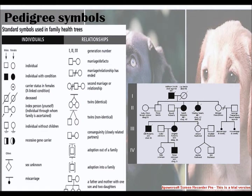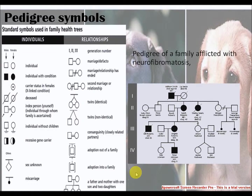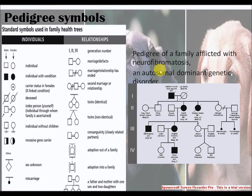This is also an example of a pedigree — the pedigree of a family afflicted with neurofibromatosis, an autosomal dominant genetic disorder.